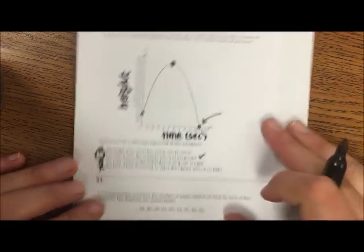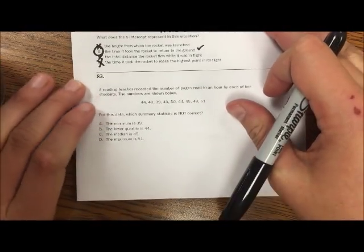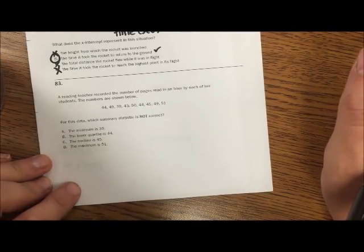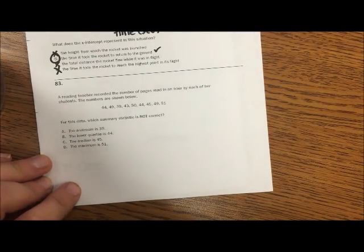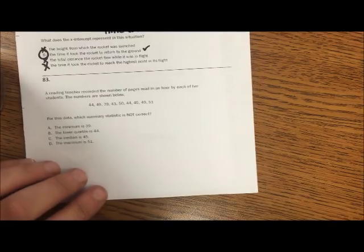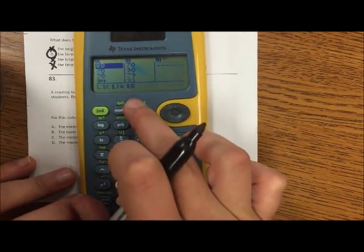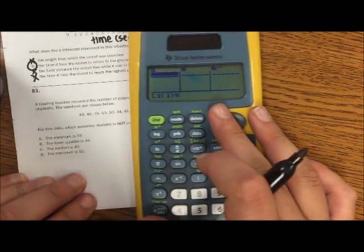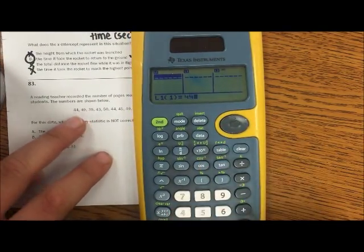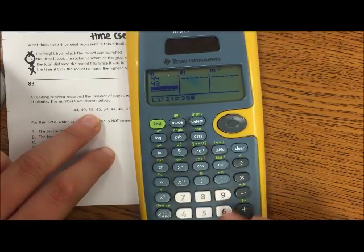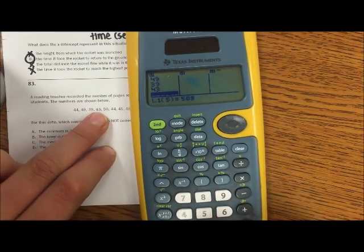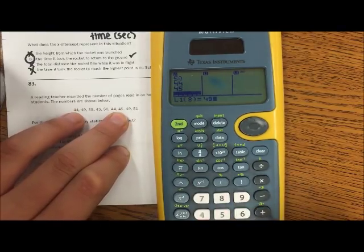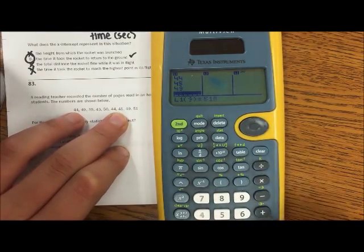83: A reading teacher records the number of pages read in an hour by each of her students. The numbers are shown below. Which summary statistic is not correct? So let's use our calculators. Let's plug in this data: 44, 49, 39, 43, 50, 44, 45, 49, 51.